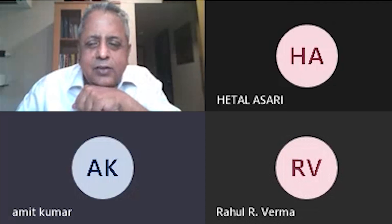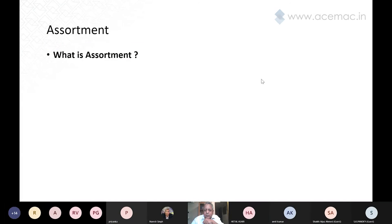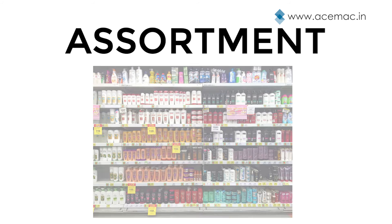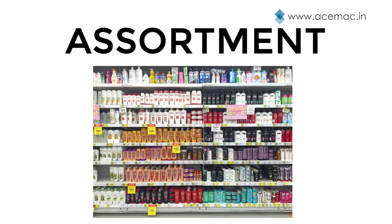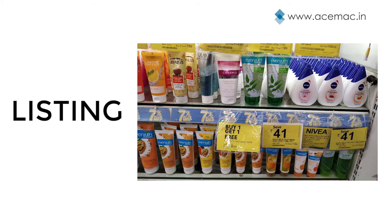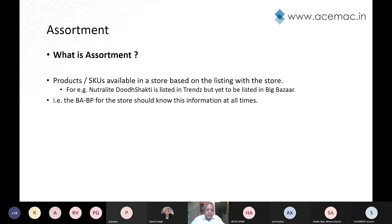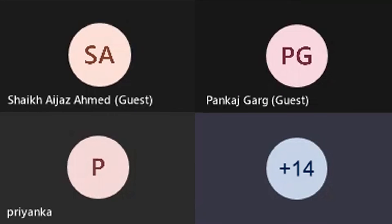Thank you. Let's go back to the slide: assortment means the products or SKUs that are available in a store based on the listing with that store. Priyanka, you are correct regarding the listing point. As others also mentioned, for example, Neutral Light is listed in Trends but is yet to be listed in Big Bazaar.